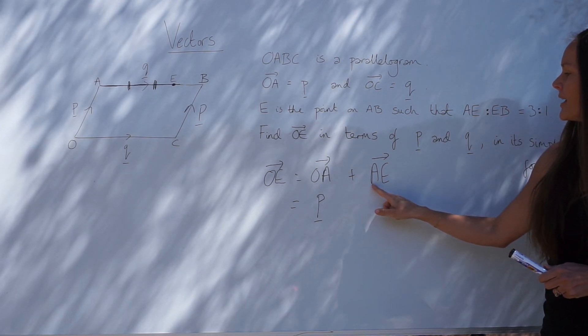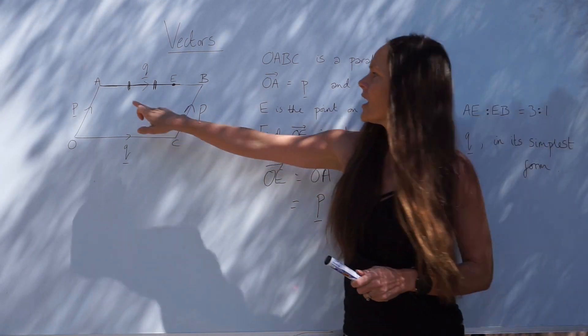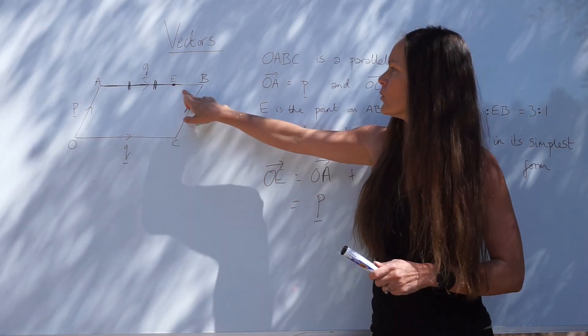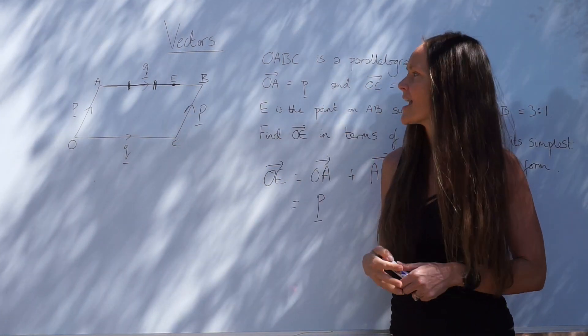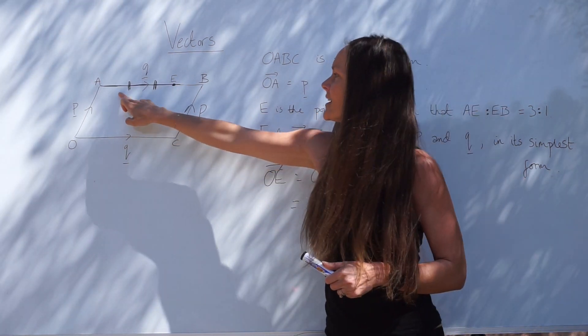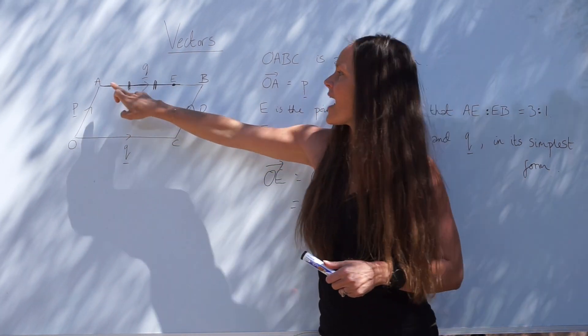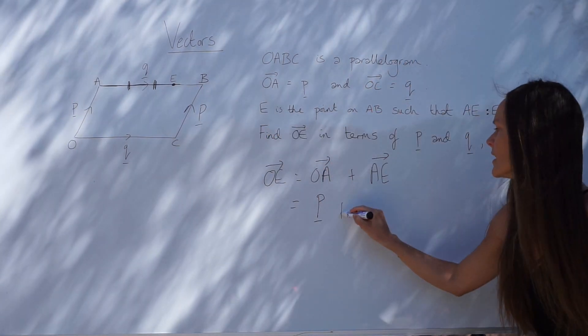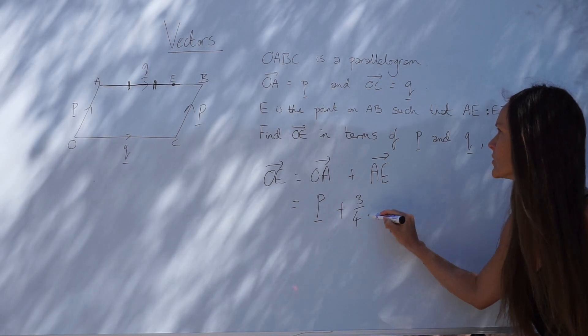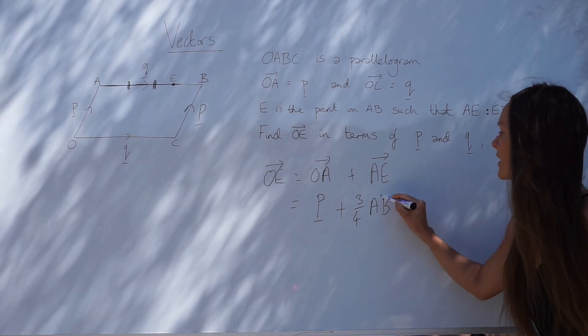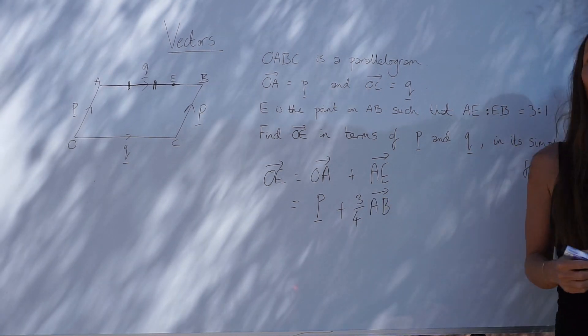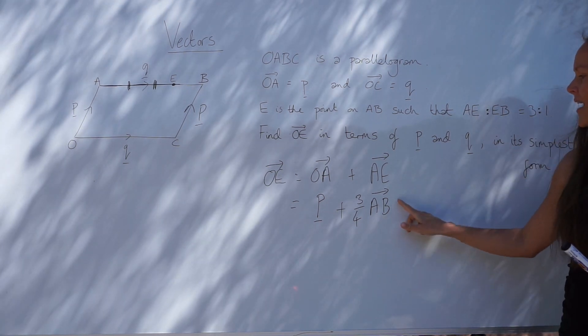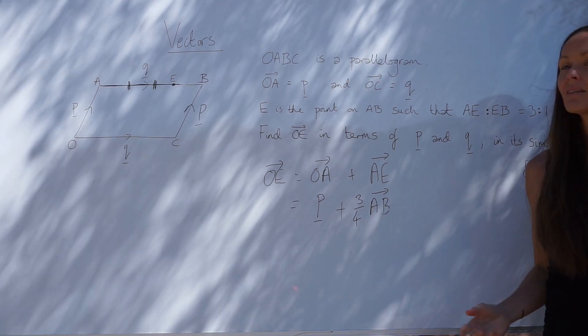Now, to get from A to E, I'm travelling three quarters along the line AB. Remember, A to E is three parts, and there are four parts altogether along the line AB. So if we're travelling three quarters along the line AB, you can then replace AB with vector Q.